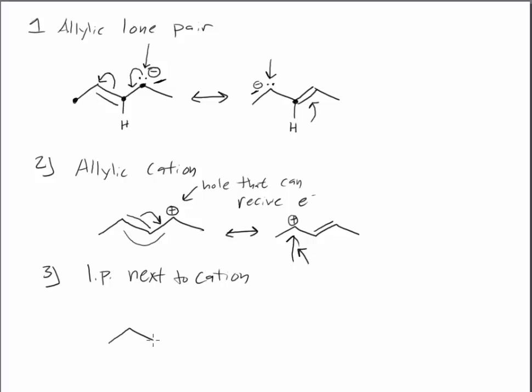The third is a lone pair next to a cation. And so we can look at an example here. Here I'll make an oxygen with three lone pairs. It has a negative charge. As we know from our formal charge discussion, there's a cation on this middle carbon right here. And the lone pair next to a cation, we can use a lone pair again. We're not breaking a single bond. We're not exceeding the octet.